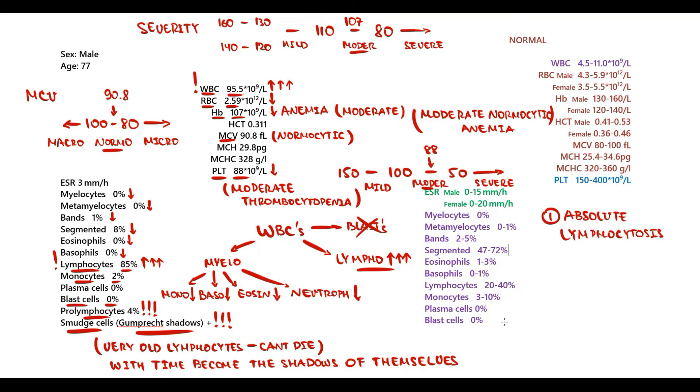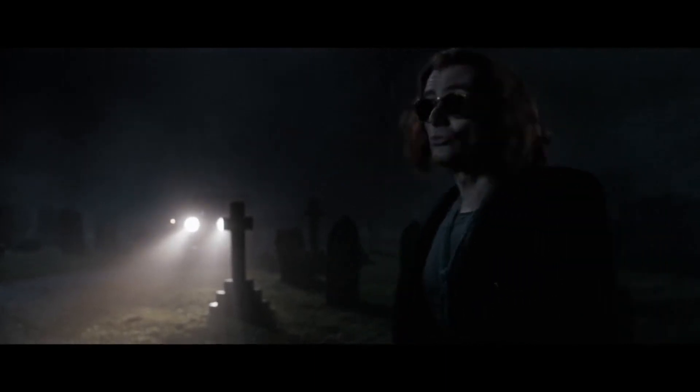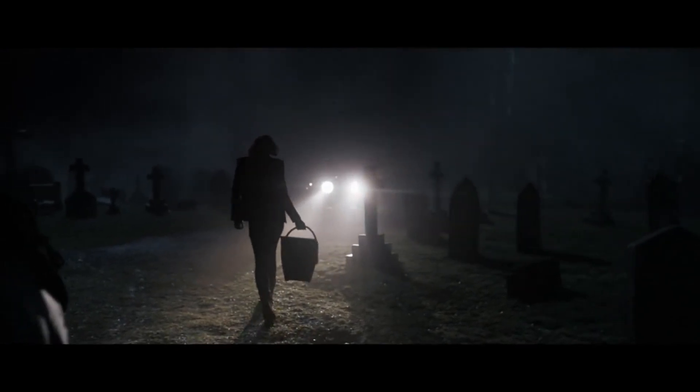We see huge absolute lymphocytosis, which is the major criteria of chronic lymphocytic leukemia. In addition, there are prolymphocytes and smudge cells, which are also signature features of chronic lymphocytic leukemia. So it's chronic lymphocytic leukemia complicated by moderate normocytic anemia and moderate thrombocytopenia.